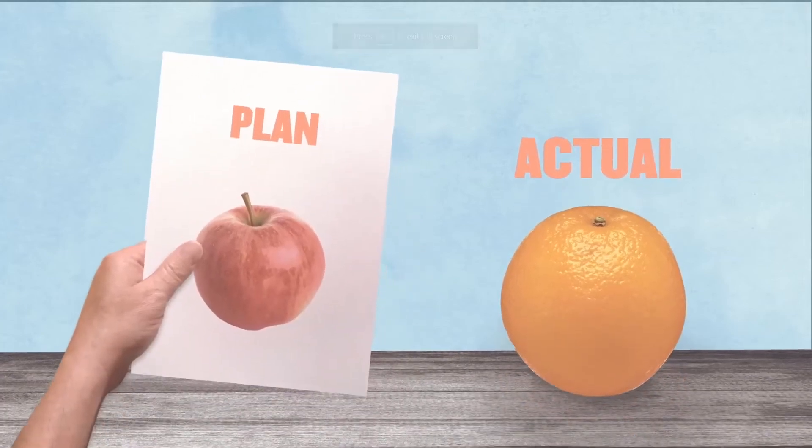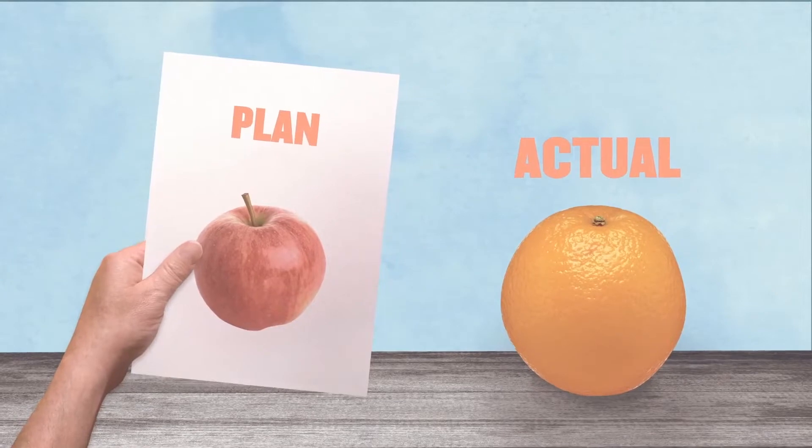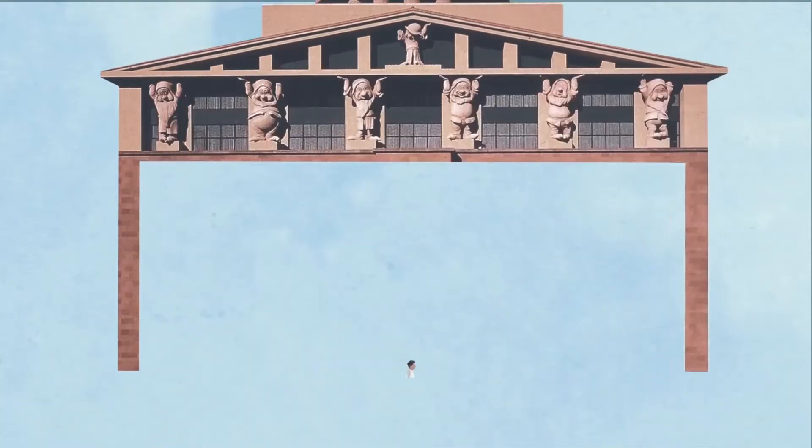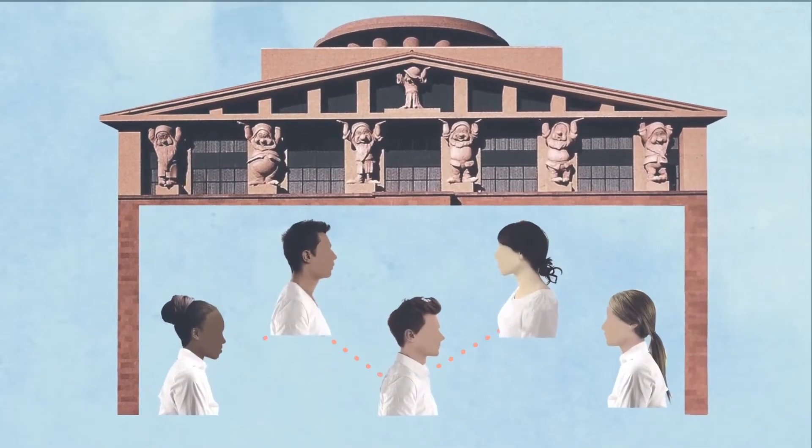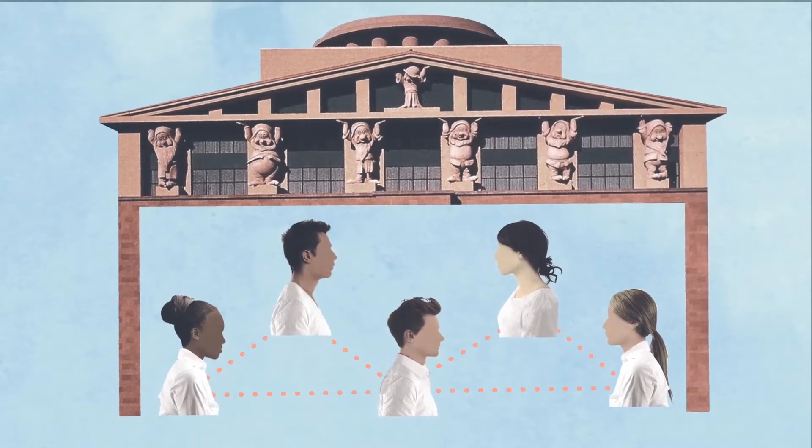When an outcome is different than a plan or an expectation, use a reconciliation to explain what happened. I learned this from one of my bosses at Disney, and it made communication way better, way easier inside the company.